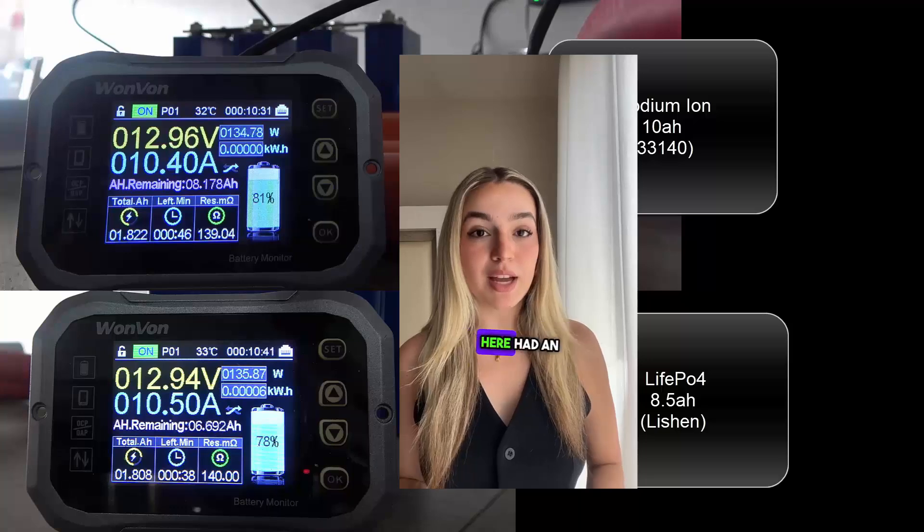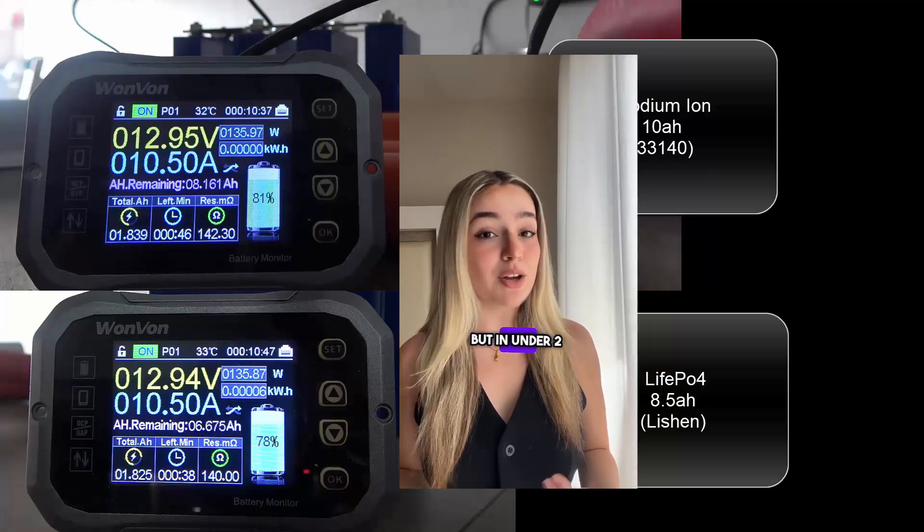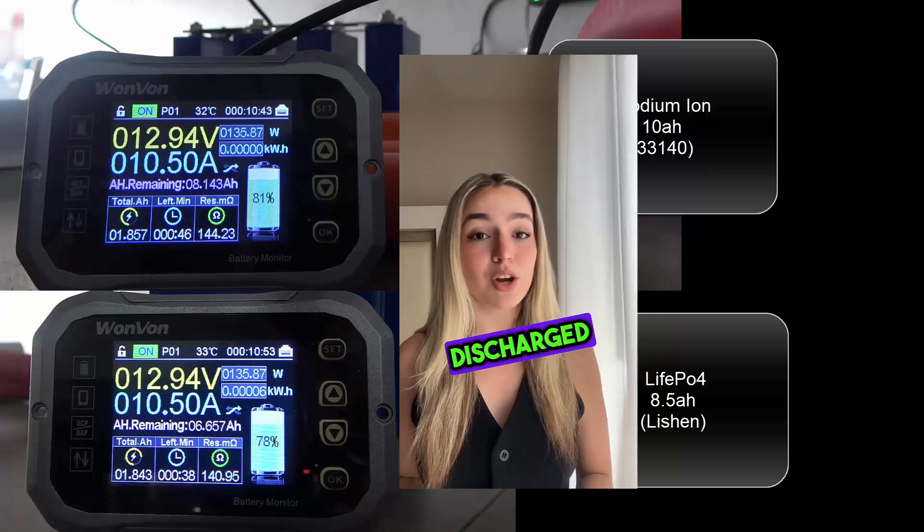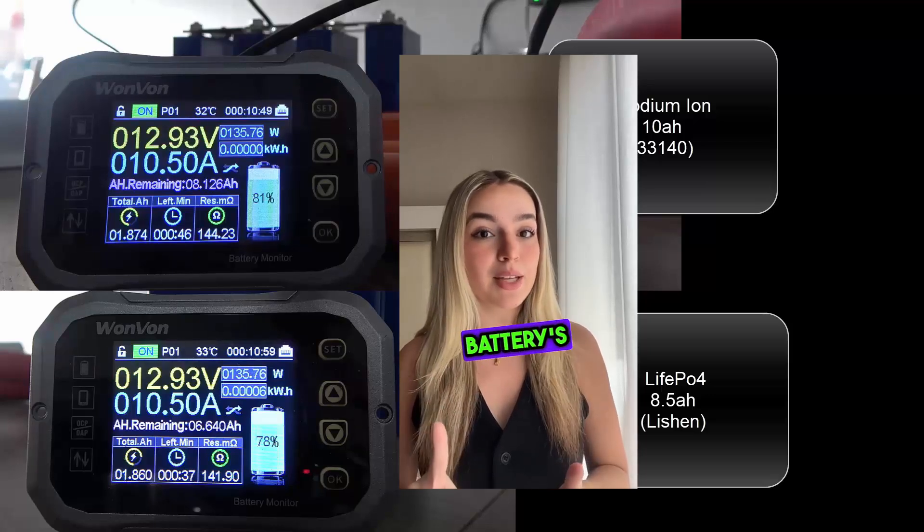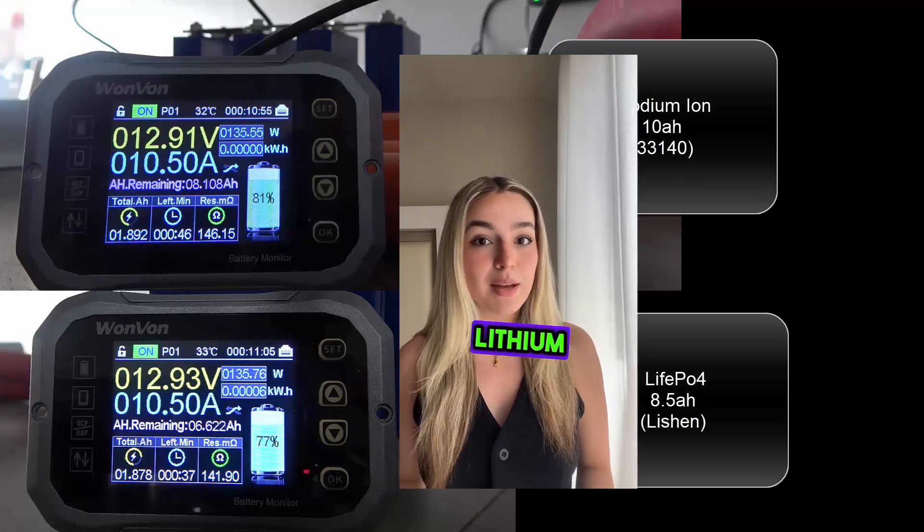The sodium ion battery here had an impressive start, but in under 2 amp hours of capacity discharged, we can see here that the sodium battery's voltage has now dropped below the lithium iron phosphate's.